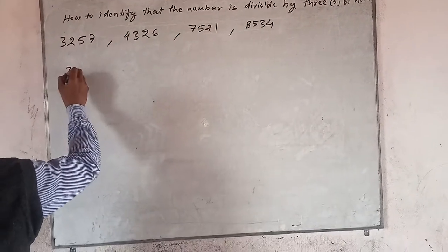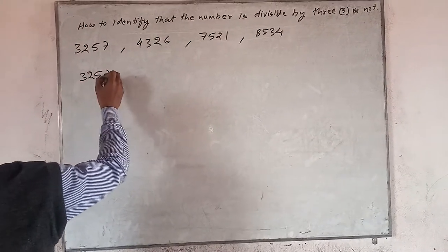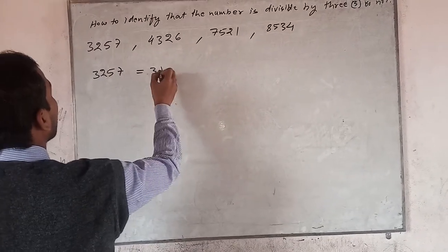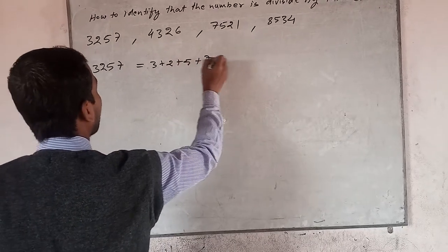Here, the first number is 3257. Now, get the sum, the addition of all the digits: 3 plus 2 plus 5 plus 7.